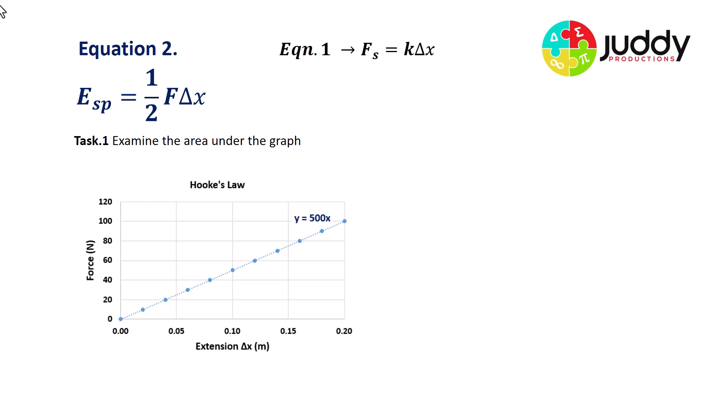First of all, from our graph, let's examine the area under our line. So you can see in this green region under the line down to the X axis that we have the area of a triangle. And of course, the equation for the area of a triangle is a half times base times height.